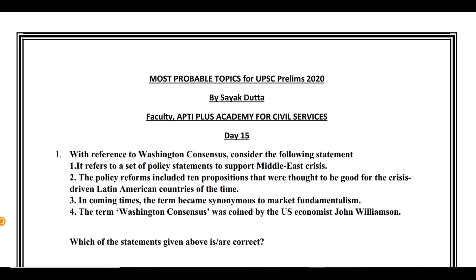The first question is with reference to the Washington Consensus. Consider the following statements: First, it refers to a set of policy statements to support the Middle East crisis. Second, the policy reforms included 10 propositions thought to be good for the crisis-driven Latin American countries. Third, the term became synonymous with market fundamentalism. Fourth, the term Washington Consensus was coined by US economist John Williamson.